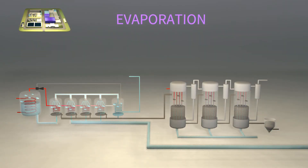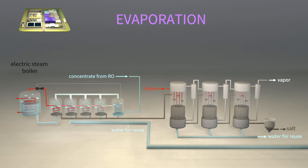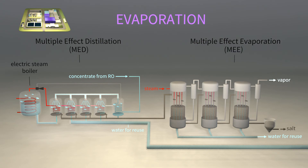In the evaporation, the concentrate is further concentrated by evaporating water until solid salt crystallizes. Evaporation is very energy-intensive. To make it more efficient, evaporation powered by an electric steam boiler is done in a sequence of effects. The units are called multi-effect distillation, MED, and multi-effect evaporation, MEE. The product is solid salt that can be used, for example, in the leather industry.